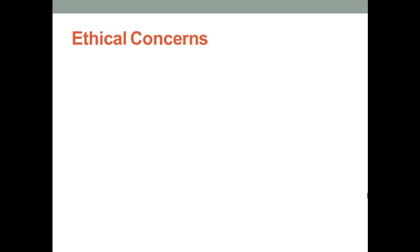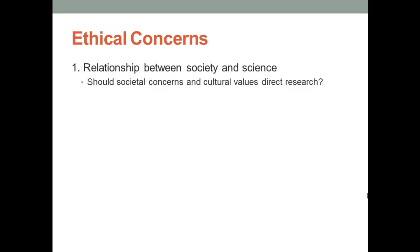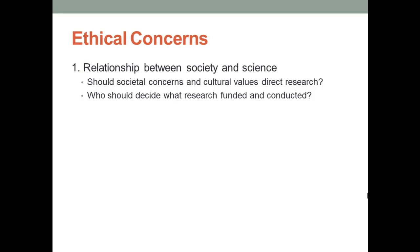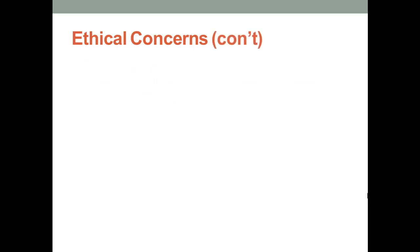There are three primary areas of ethical concern for researchers. First, the relationship between society and science raises questions about how much societal concerns and cultural values should affect research. Should researchers study what is considered important in society at a time? Should the federal government and other funding agencies use grants to affect the areas researched in a society? There are many relevant examples in our current media — for example, stem cell research and abortion rights are both highly volatile topics because of the relationship between society and science.